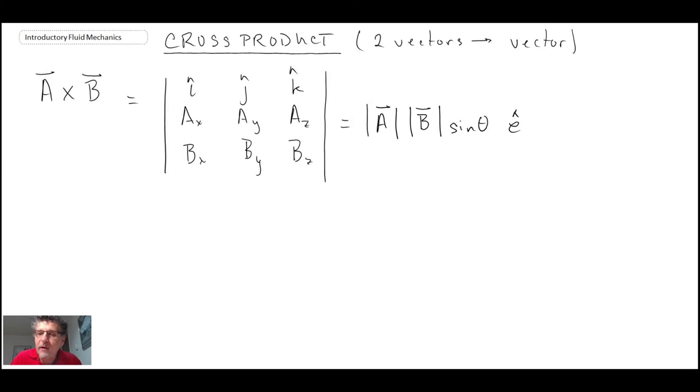This has a sine theta, and it is operating in the direction e that we do not yet know. But we use the thing called the right-hand rule, in order to enable us to figure out what that direction e is.